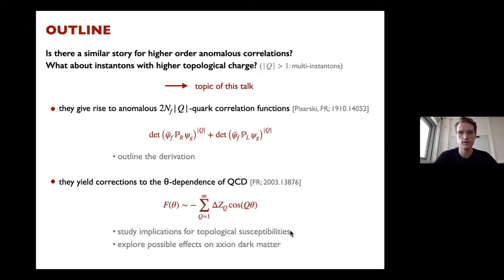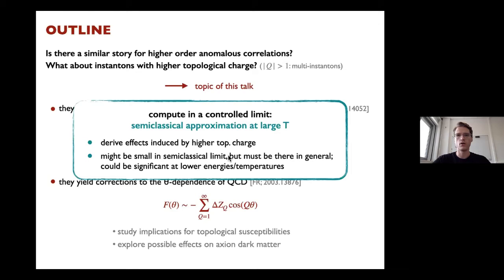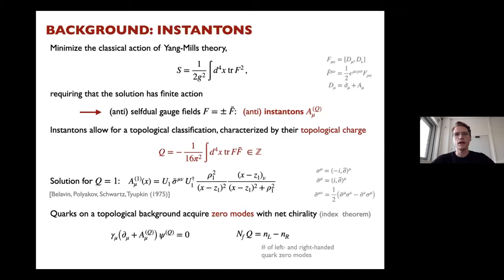I will also explore possible effects for axion dark matter, which I'll explain toward the end. As a disclaimer: I compute in a controlled semi-classical approximation, valid at small coupling or large temperatures. In this limit, these effects are small, but the purpose is to show that they exist. How large they might be at lower energies is a question I won't answer here.